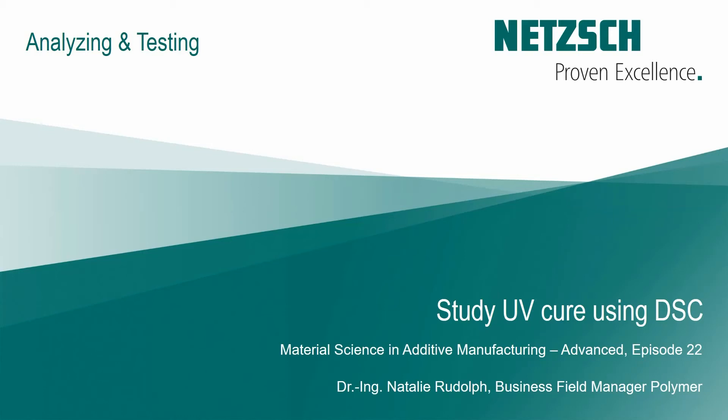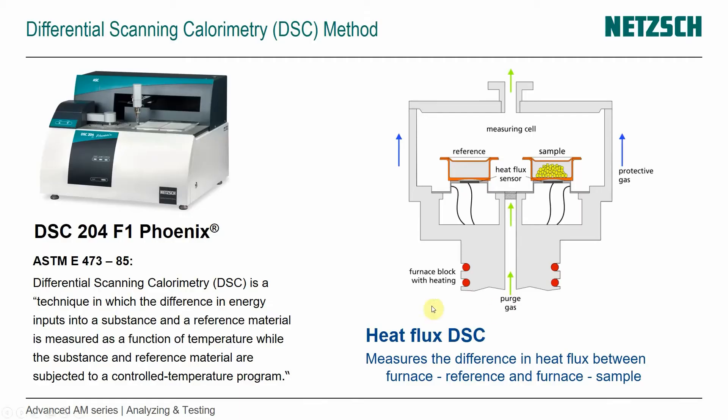In this episode, I'm going to explain how to investigate UV cure using differential scanning calorimetry. You're already familiar with the principle of DSC from some of the previous videos, and it's really about measuring heat flux effects between a sample in the furnace and a reference in the furnace to see the differences we get in the two signals.